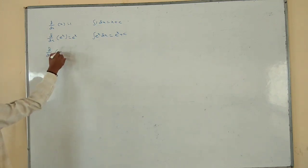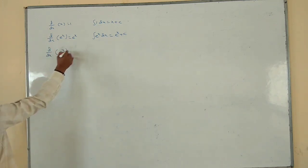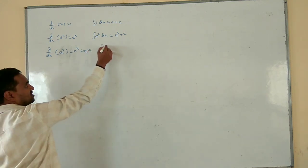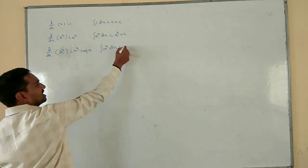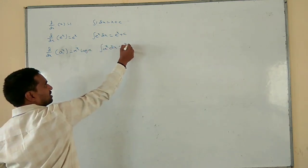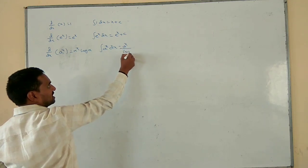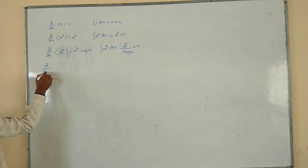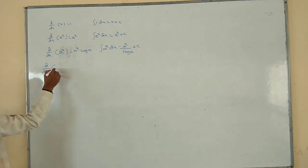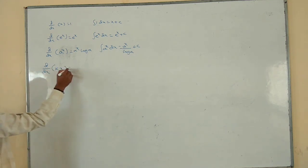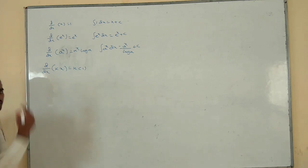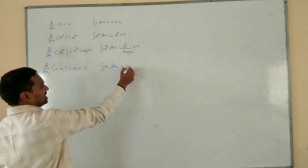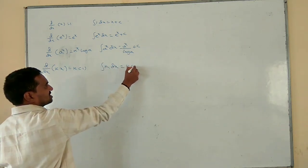dy/dx of a power x is a power x into log a. Integration of a power x dx equal to a power x by log a plus c. dy/dx of kx is k into x differentiation, which is 1. Integration of k dx equal to kx plus c.